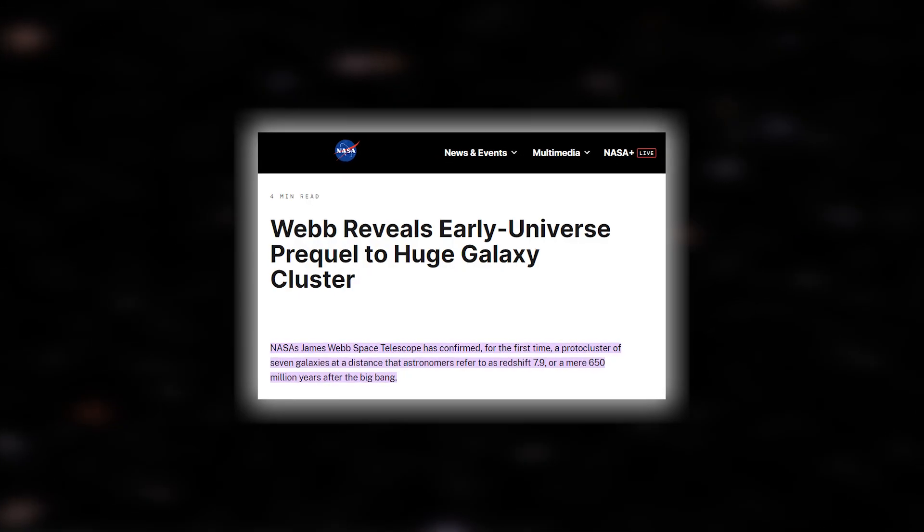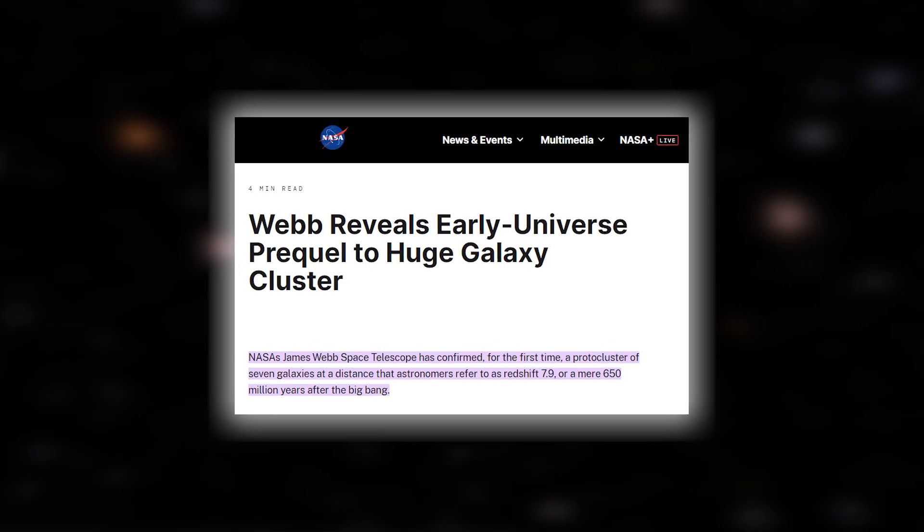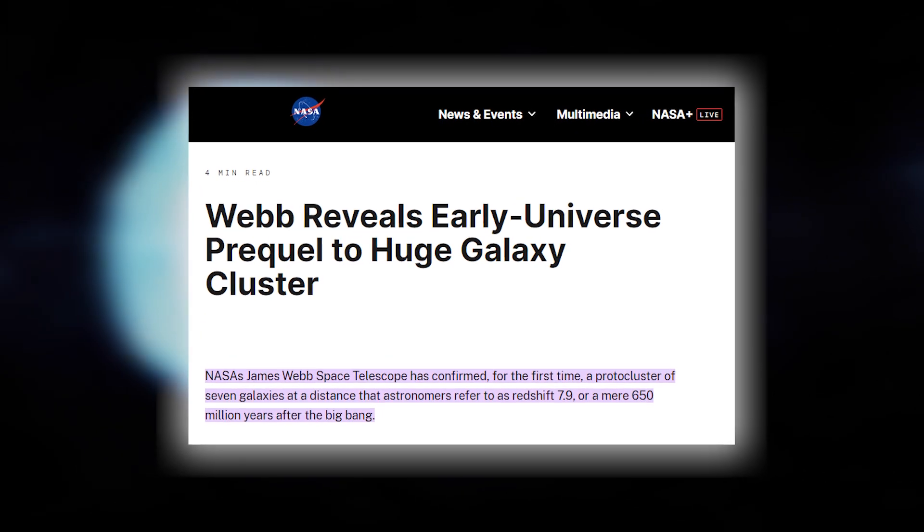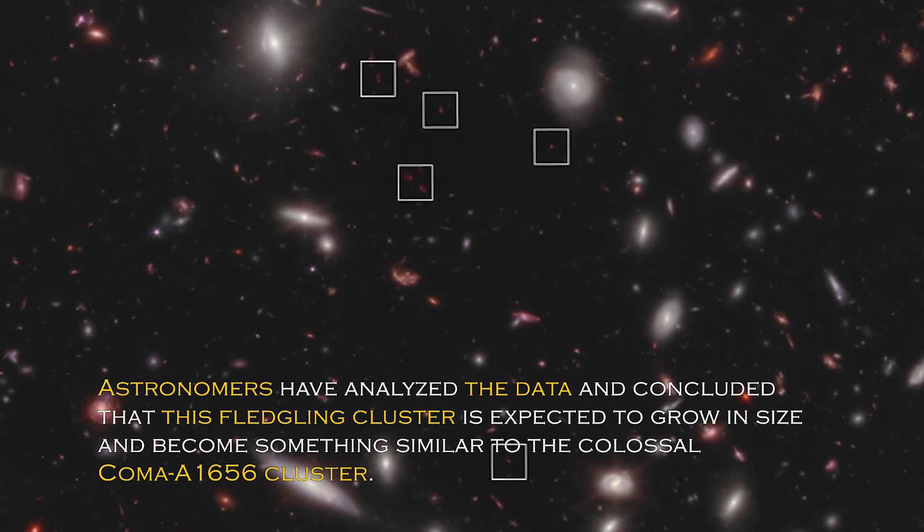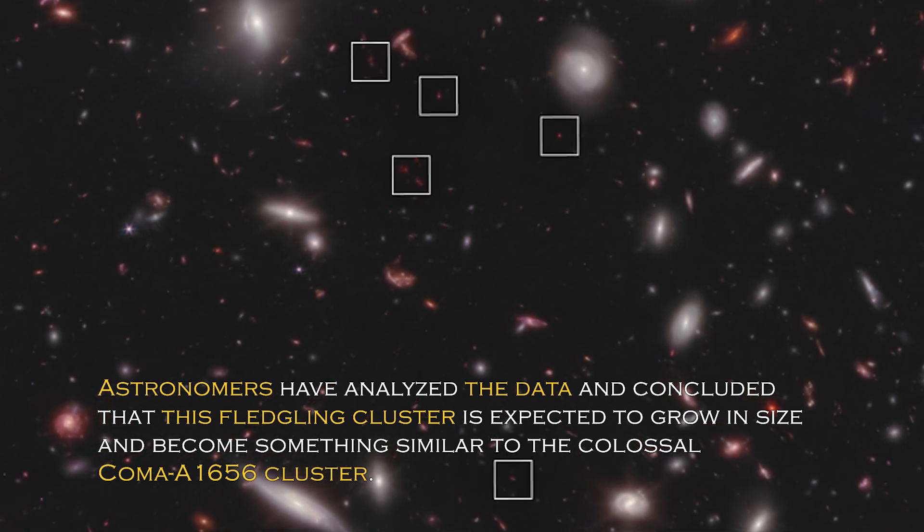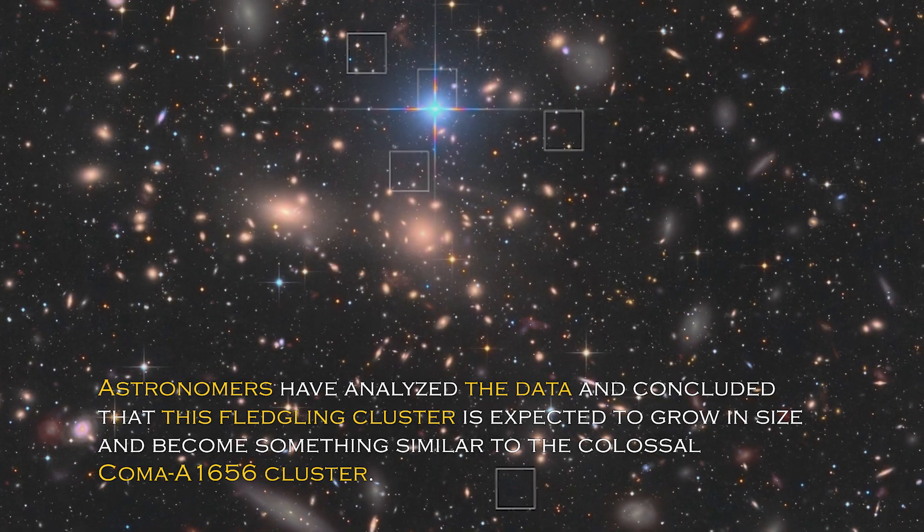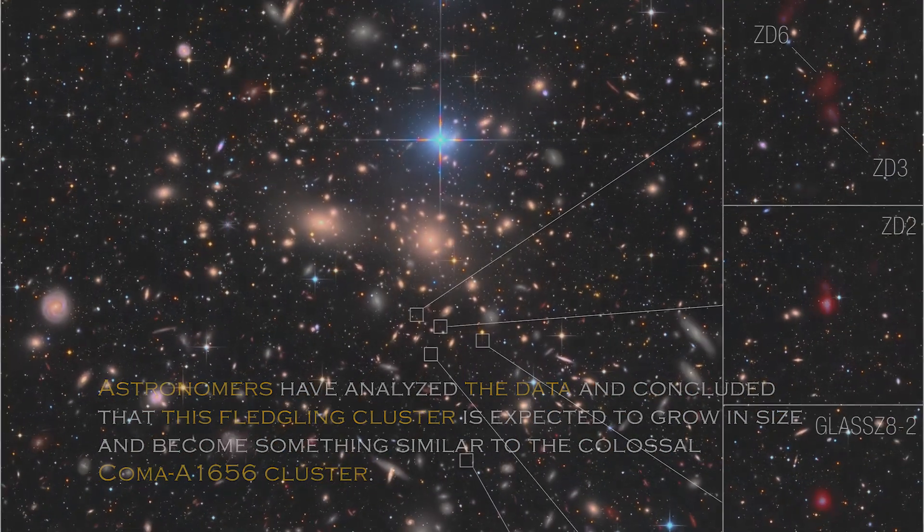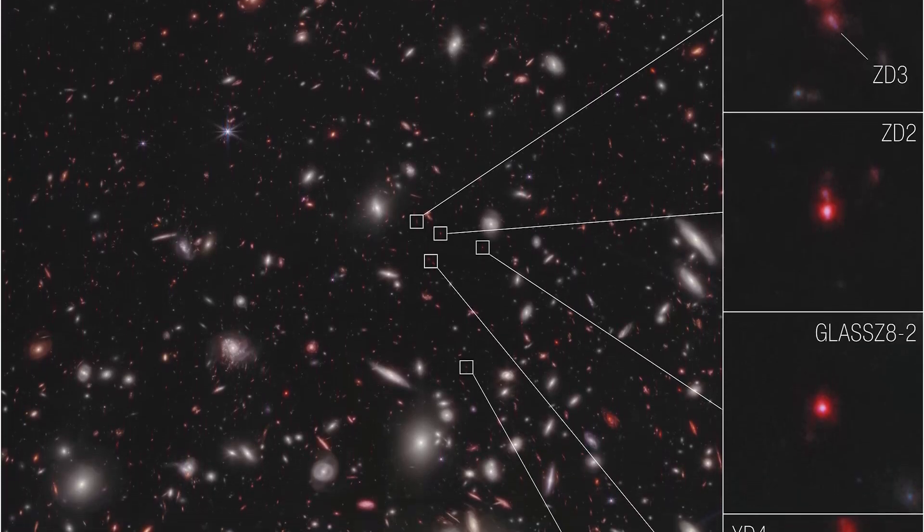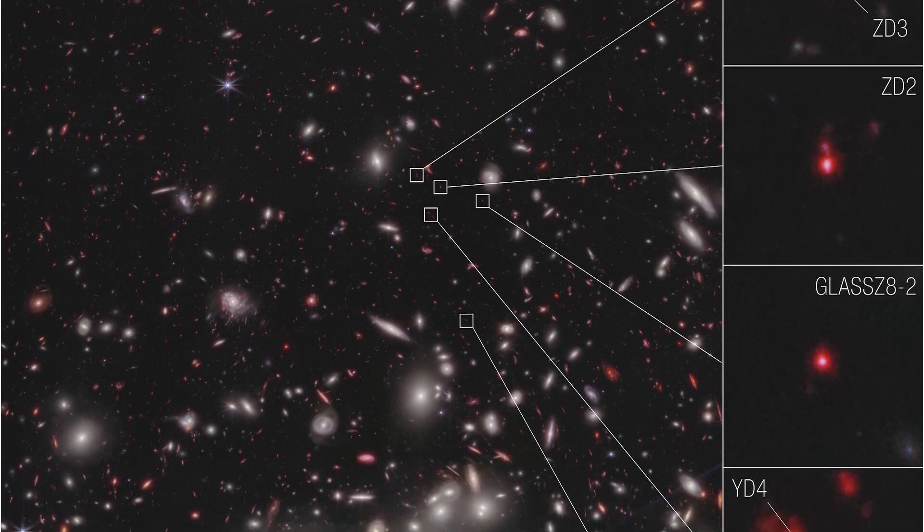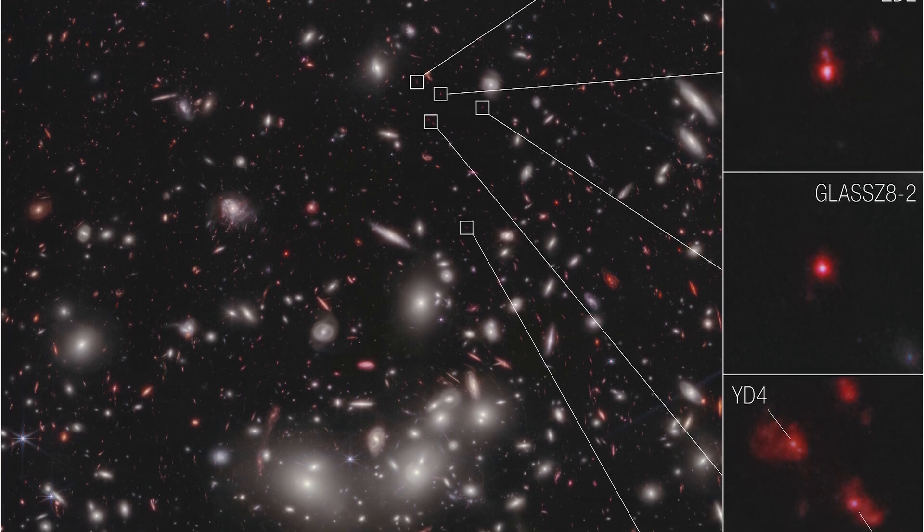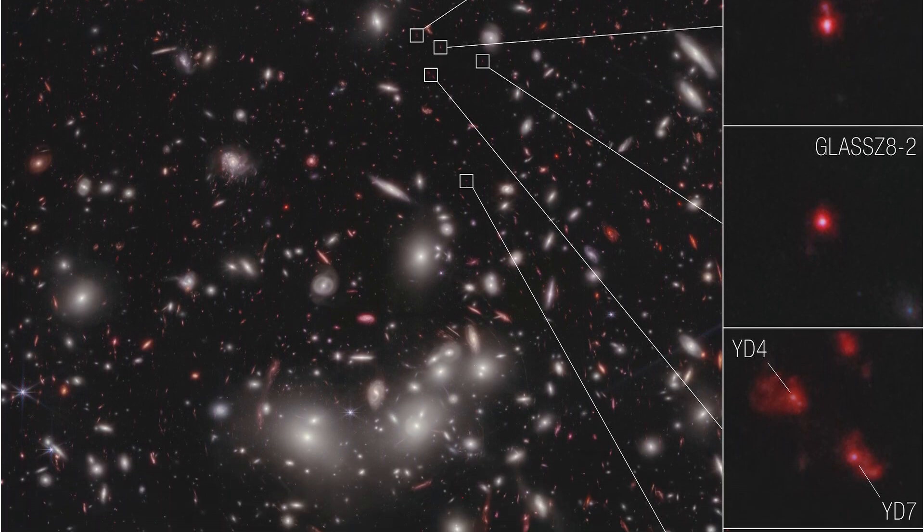NASA recently tweeted about a galaxy cluster that lies just 650 million years after the Big Bang, adding another intriguing piece to the puzzle. Astronomers have analyzed the data and concluded that this fledgling cluster is expected to grow in size and become something similar to the colossal Coma cluster. The place where all this is taking place is unique and special, as it is in an area of accelerating galactic evolution. Now researchers can measure the velocities of these seven galaxies, which gives them the confidence to confirm that they are bounded together in a protocluster.